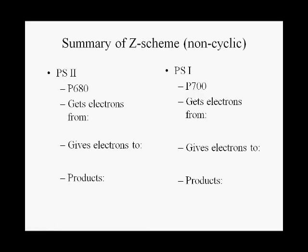Here is our summary of non-cyclic electron flow with two photosystems. Photosystem II gets its electrons from water, gives its electrons to the electron transport chain, and the main products are oxygen gas and ATP through chemiosmotic ATP synthesis. Photosystem I gets its electrons from the electron transport chain at the end of the chain, and gives its electrons ultimately to NADP+ to make NADPH.